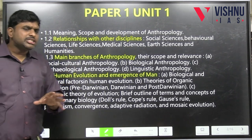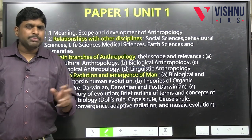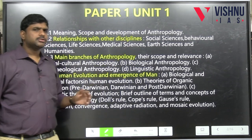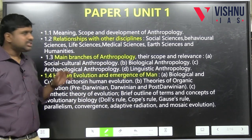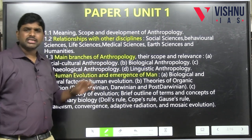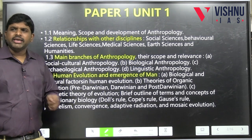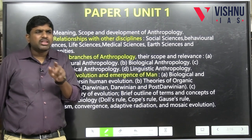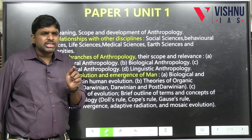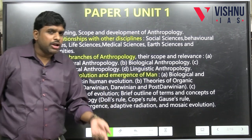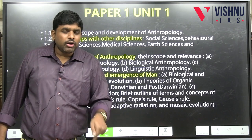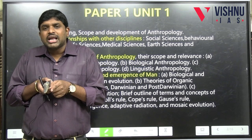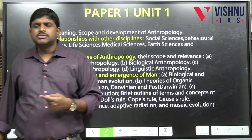Unit 1.2 covers the relationship of anthropology with other disciplines — sociology, social science, behavioral science, psychology, life sciences, biology, medical science, earth science, humanities, political science, geology. For example, paleolithic, mesolithic, and neolithic periods come under geology, and anthropology studies this too. The relationship between geology and anthropology is covered in 1.2.